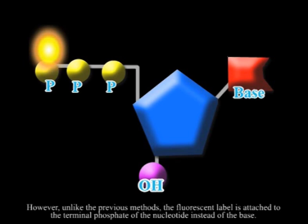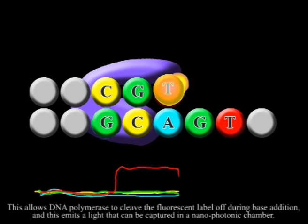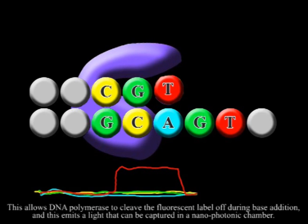However, unlike the previous methods, the fluorescent label is attached to the terminal phosphate of the nucleotide instead of the base. This allows DNA polymerase to cleave the fluorescent label off during base addition, and this emits a light that can be captured in a nanophotonic chamber.